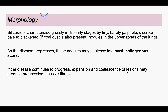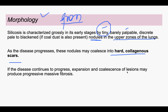Looking at the morphology — grossly, in earlier stages there will be very tiny, barely palpable, small nodules present, mostly in the upper zones of the lung. With time, these nodules will coalesce and join to form hard collagenous scars. If the disease progresses further, these hard collagenous scars will again expand and coalesce, leading to progressive massive fibrosis. So the progression goes from tiny nodules, to hard collagenous scars, and then to progressive massive fibrosis. Here you can see in this image the collagenous scar that is present.